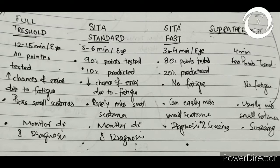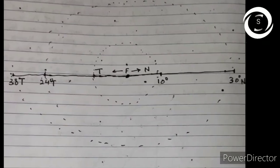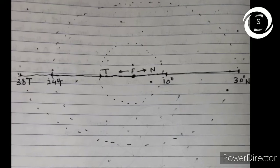Supra threshold checks few points with stimuli of bright high luminance and compares with age-matched population to detect gross visual fields. They are used for screening.